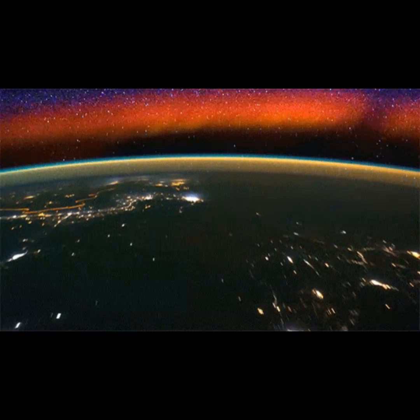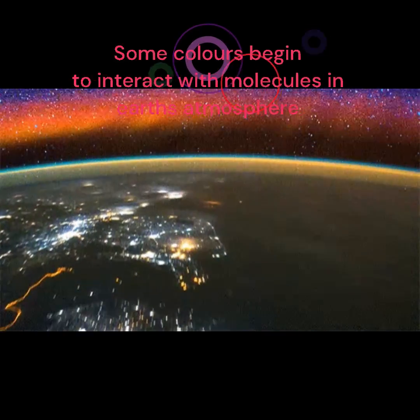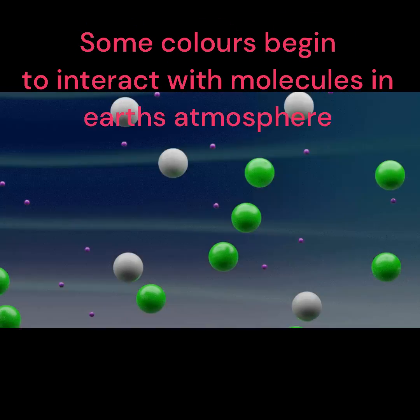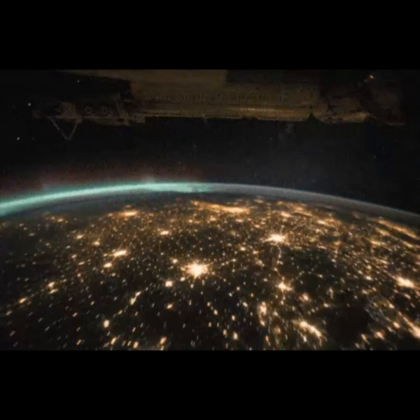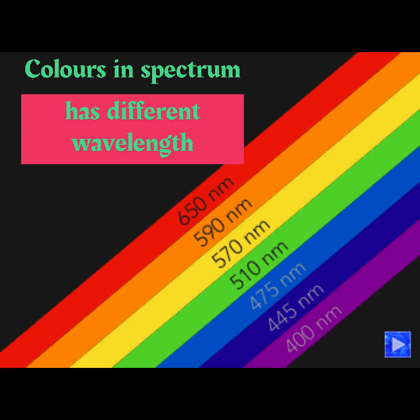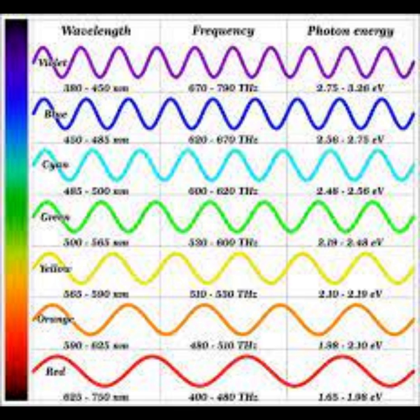some of the colors begin to interact with molecules and small particles in the atmosphere. Each color in the visible light spectrum has a different wavelength. Red and orange light waves, for instance, have longer wavelengths